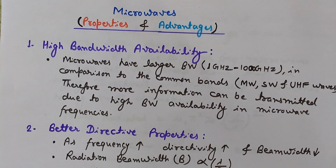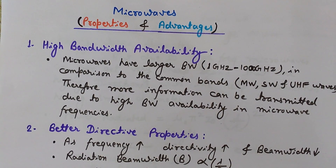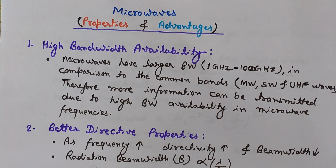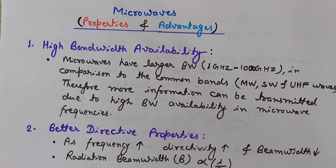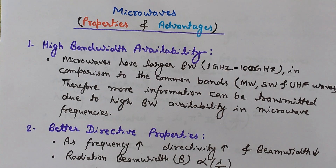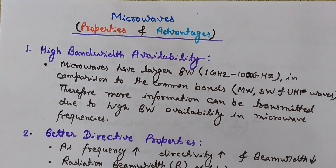Welcome to Engineering Made Easy. I am Lalith Vasist. In this video lecture we will discuss what are microwaves and their properties and various advantages. Microwaves are nothing but electromagnetic waves, and they are called microwaves because the wavelength of microwaves is small — micro — that is the reason why they are called microwaves.